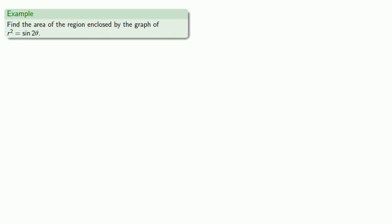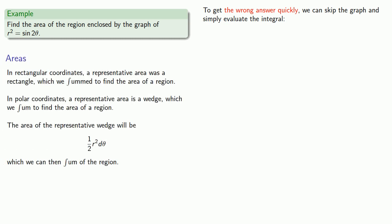So now we know that our formula works in a situation where we know the answer. Let's apply it to a situation where we don't know the answer and find the area of the region enclosed by the graph of r squared equals sine of 2θ. To get the wrong answer quickly, we can skip the graph and simply evaluate the integral. I know that I'm going to be evaluating 1/2 r squared d theta over the region between 0 and 2π, so I'll drop that into my integral and evaluate it. And we get the answer of 0, which we happily circle and say this is the area of the region. And if your goal is to very quickly get the wrong answer, this is exactly how you should proceed.